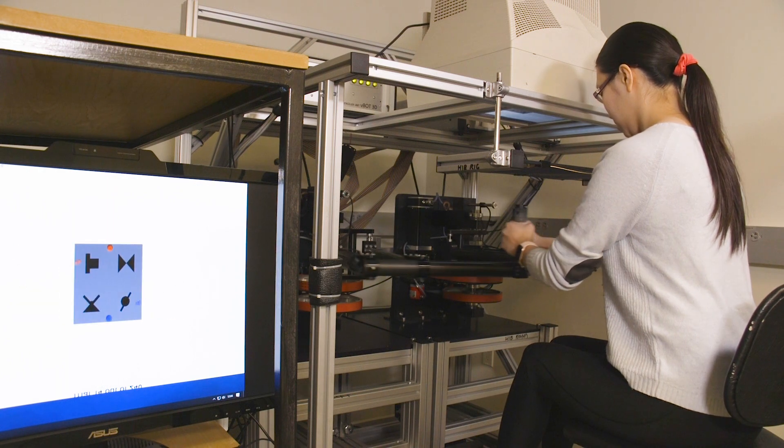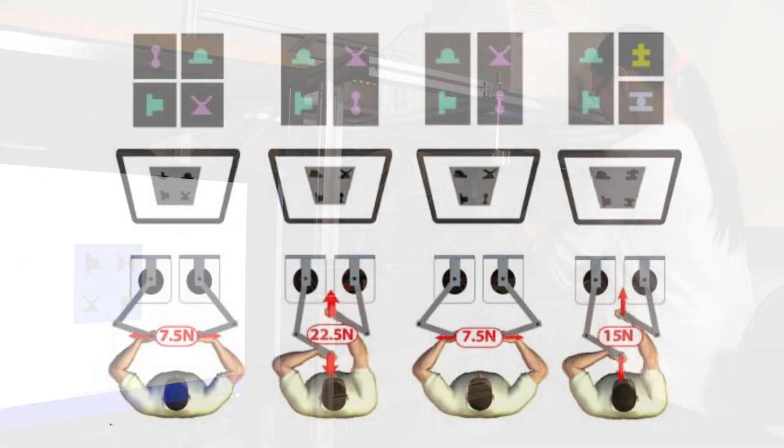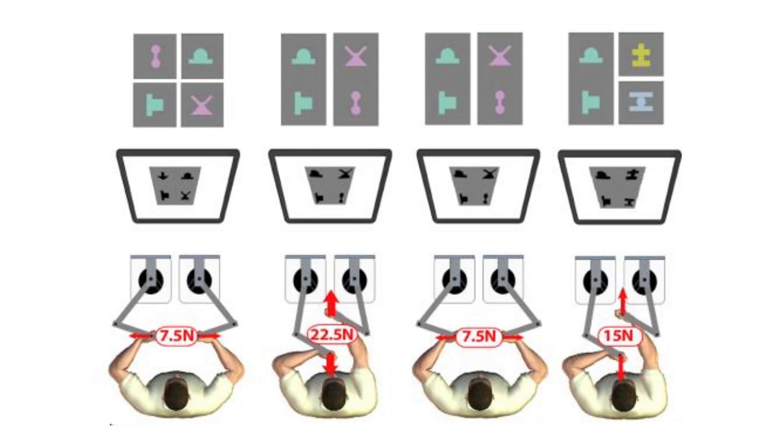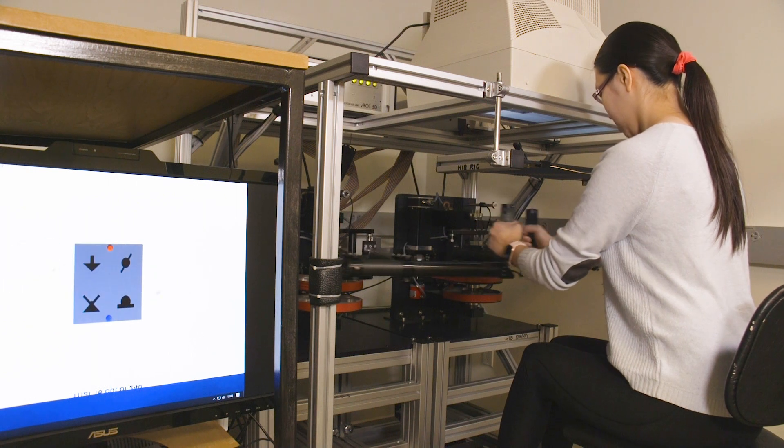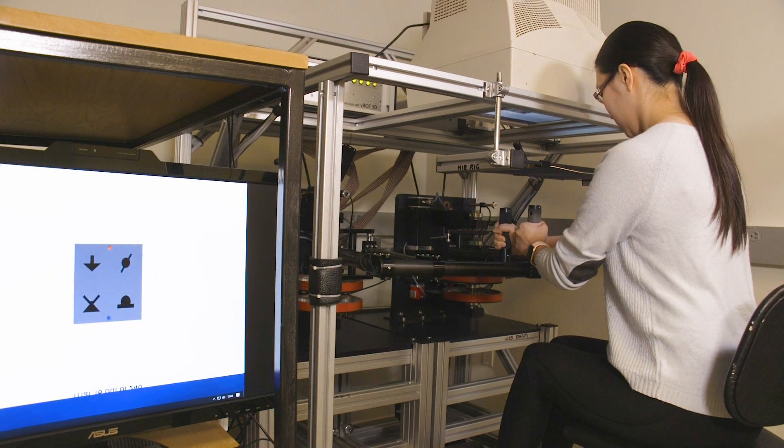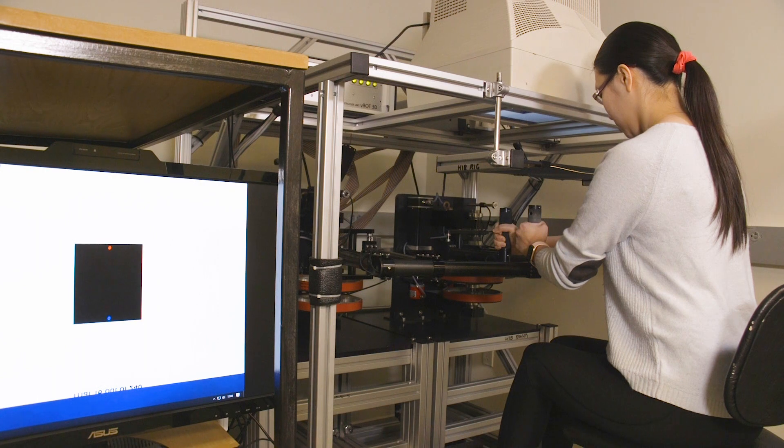So the forces that she feels on different trials varies between about seven newtons and about 25 newtons. And the idea of the experiment is to see whether the subject can internalize these forces and work out what are real objects and what are fake objects they can learn to predict the forces they can produce later on.